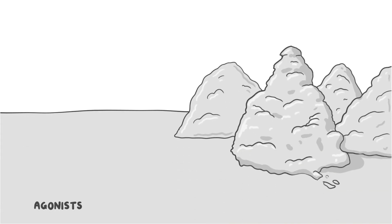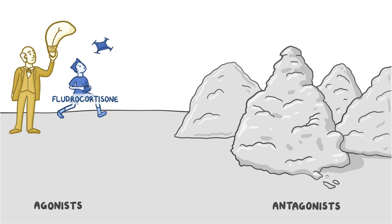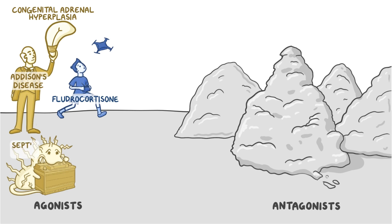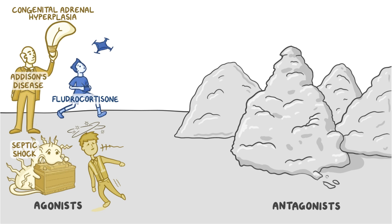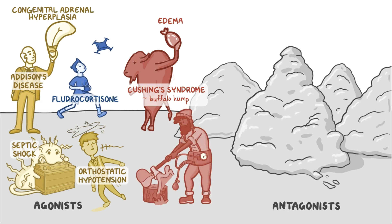For the mnemonic, imagine a junkyard with agonists on the left and antagonists on the right. On the agonists' side, a boy built a flying drone for fludrocortisone. His father, Thomas Edison, represents Addison's disease, and he's holding a large adrenal gland-shaped light bulb to represent congenital adrenal hyperplasia. A giant bacteria trying to eat a car battery and getting zapped represents septic shock, and a napping worker who stood up too quickly and felt faint represents orthostatic hypotension. For side effects, a buffalo guarding the junkyard represents the buffalo hump of Cushing's syndrome; it's about to throw a water balloon representing edema. Its muscular owner has wasting arm muscles to represent myopathy, and he's chopping the stalk of a pituitary gland to represent HPA axis suppression. He's also wearing a blood pressure cuff as a belt to represent hypertension.